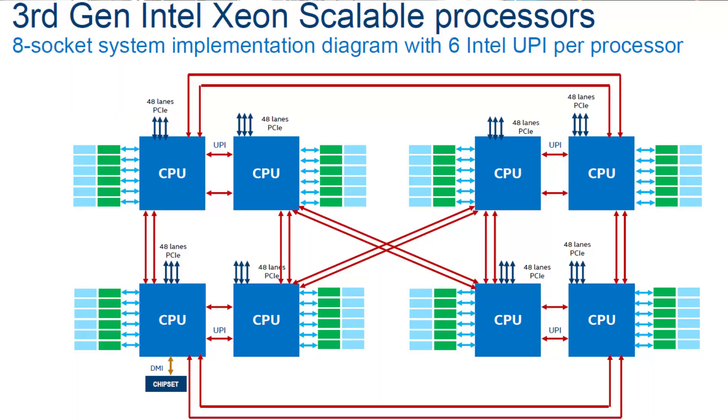At this point we would naturally be looking at the Cooper Lake processors, which are still 14nm Xeons, and thinking about bringing those into the high-end desktop space. But Intel has already said that Cooper Lake is going to be for select customers only on eight-socket systems, and it's just another version of Skylake with BFloat16 support for AI instructions. So they're not going to bring that to the high-end desktop space.